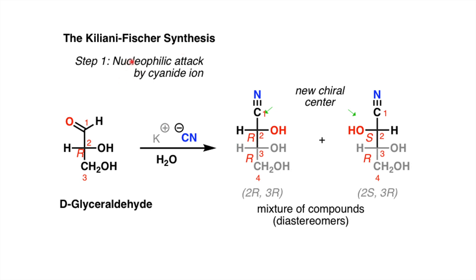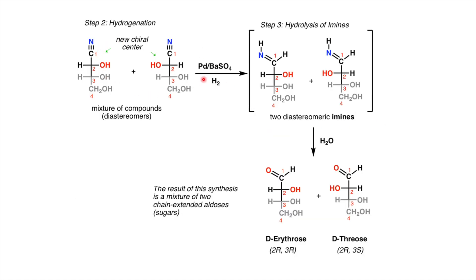The mechanism of Kiliani-Fischer synthesis: first is nucleophilic attack by cyanide ion. When you take D-glyceraldehyde and treat it with potassium cyanide in the presence of water, nucleophilic attack of the cyanide group happens on the carbonyl carbon, and you get a mixture of compounds - a pair of stereoisomers or diastereomers - because a new chiral center is generated. When you treat this mixture with palladium and barium sulfate and perform hydrogenation, you get two diastereomeric imine products.